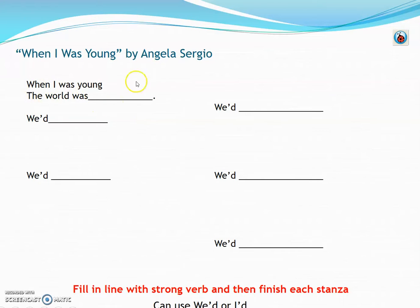The first sentence is like your topic sentence for the poem, and then each stanza will be a set of memories from that location. You can change 'We'd' to 'I'd' if you did a lot of things by yourself, or mix and match throughout the stanzas. Besides the first stanza where you state your location — 'When I Was Young, The World Was Blank' — I would like you to have five other stanzas. So when you're finished, you'll have your introductory stanza plus five additional stanzas sharing memories from those locations.